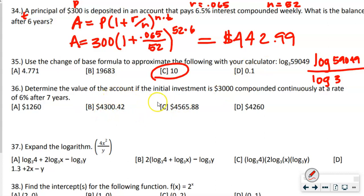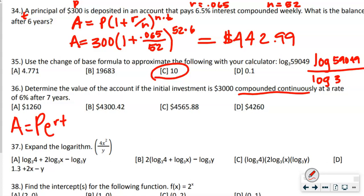Number 36 says determine the value of the account if the initial investment was $3,000 compounded continuously — key phrase. The formula for this is A equals P times E to the RT power. Our P is $3,000, R is 0.06, and T is seven. So this equals 3000 times E to the 0.06 times 7.